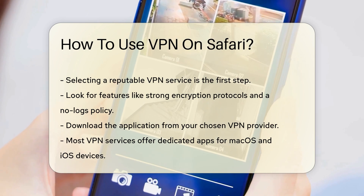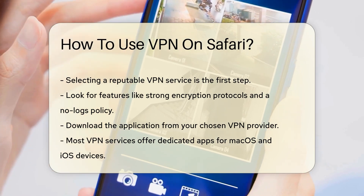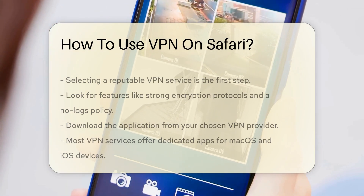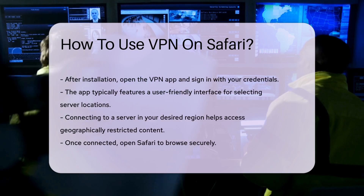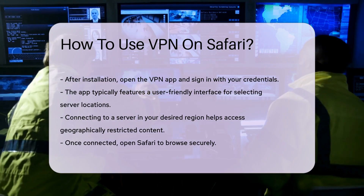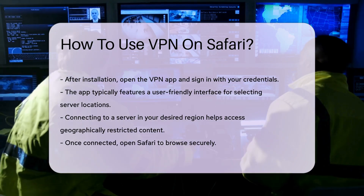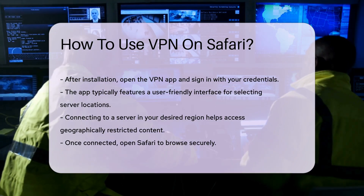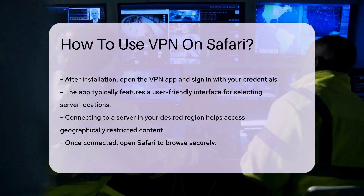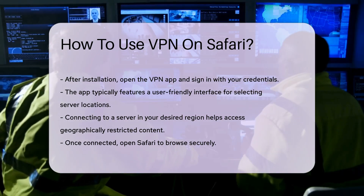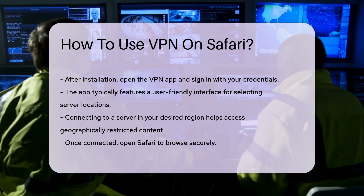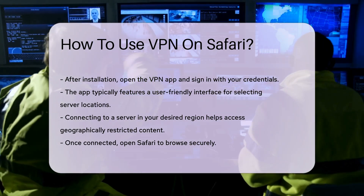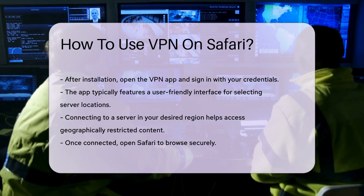The interface allows you to choose a server location. Selecting a server in your desired region can help you access geographically restricted content. Once connected to the VPN, open Safari. You should now be able to browse the internet securely.